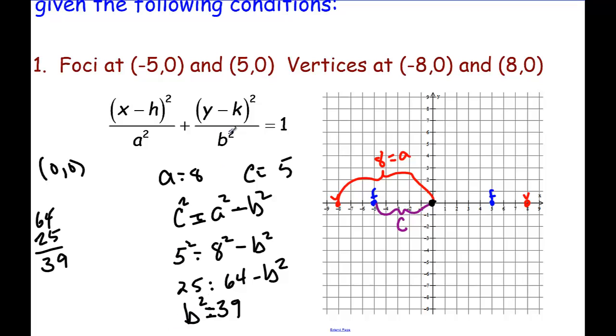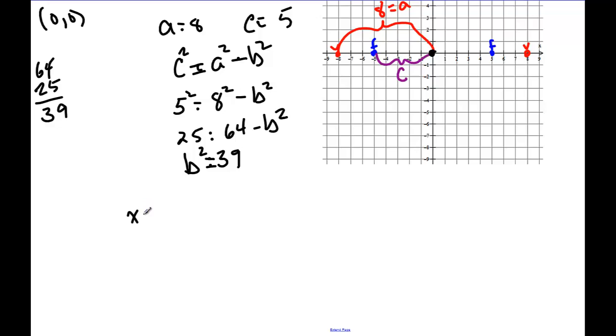Okay, so now we know our b squared value that's what goes under here. We know our a squared value then will be 64, and we can write our equation. So then our equation is x minus h, which happens to be zero, so that's x squared over a squared, which is 64, plus y minus zero, so y squared, over b squared, which is 39, and that equals one. Okay, and there you have it. That's one example.